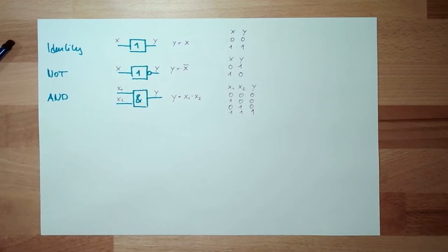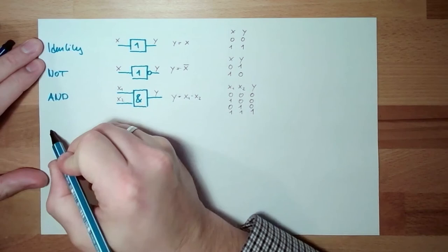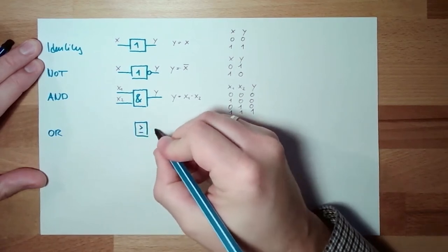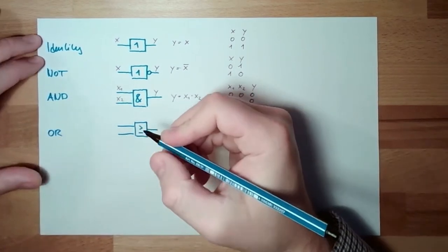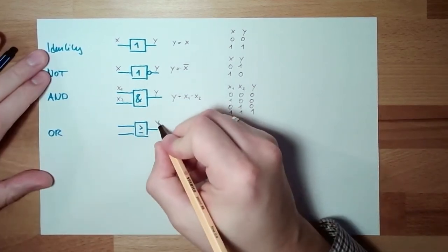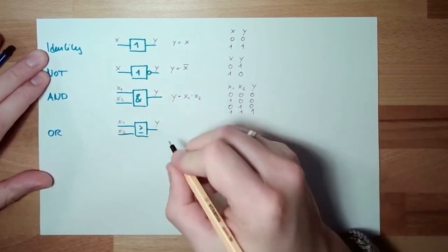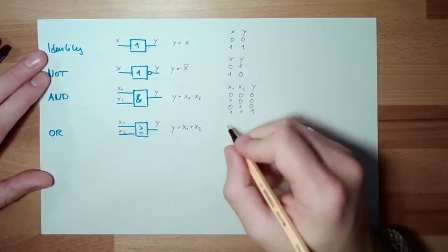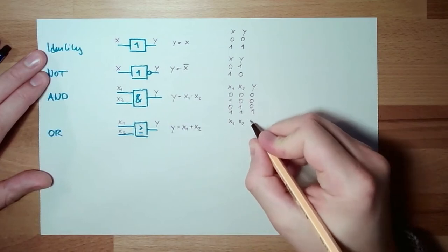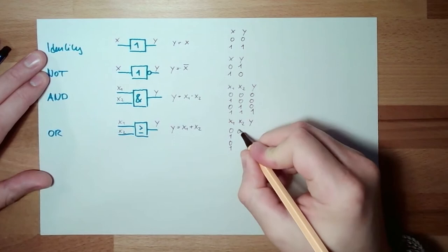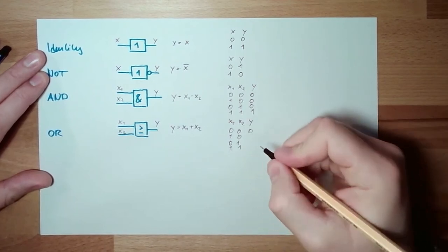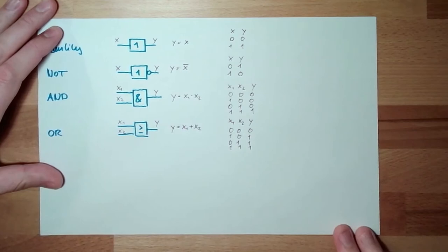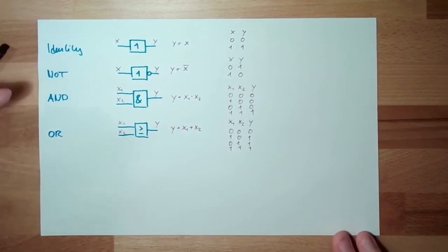Then there is the OR. The OR symbol also has two inputs X1 and X2, and one output Y. The logical equation is Y equals X1 OR X2 — it looks like a plus. The table of truth: 0,0→0; 0,1→1; 1,0→1; 1,1→1. If one or the other or both inputs are one, Y is one.